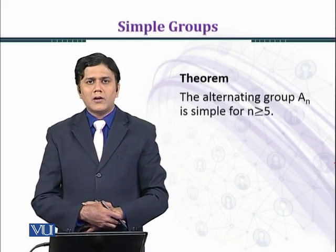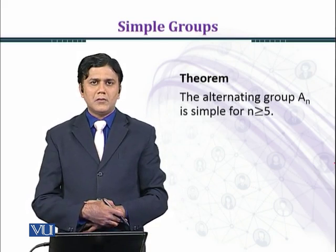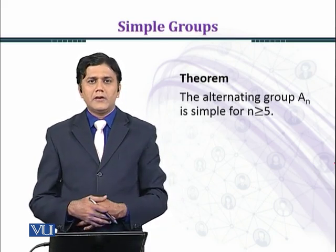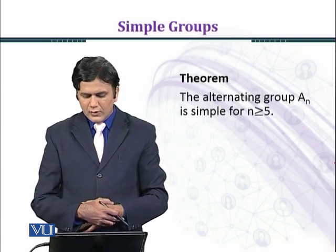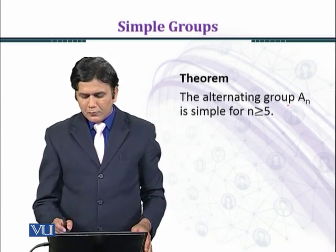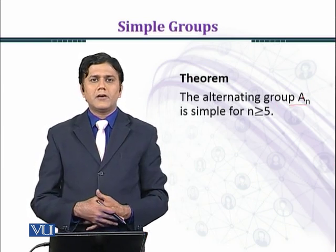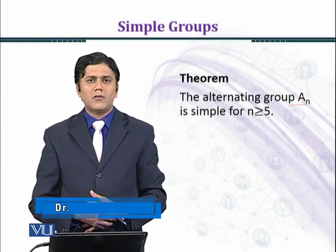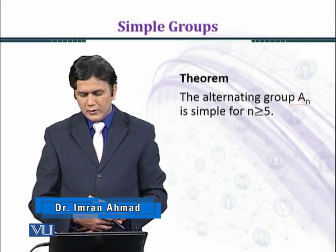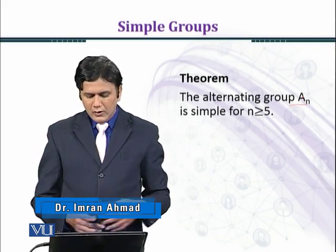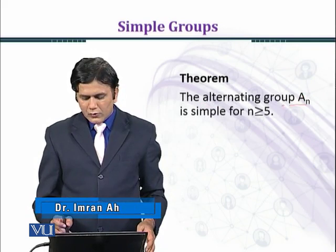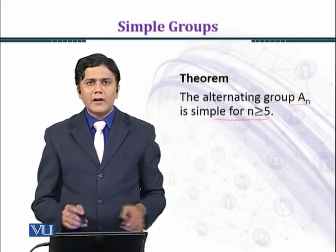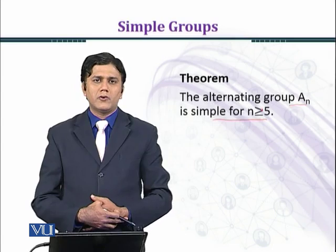Before going to the theorem which we are proving, we shall state an interesting result. The alternating group A_n is the set of all even permutations from a group. The alternating group A_n is simple for n greater than or equal to 5.